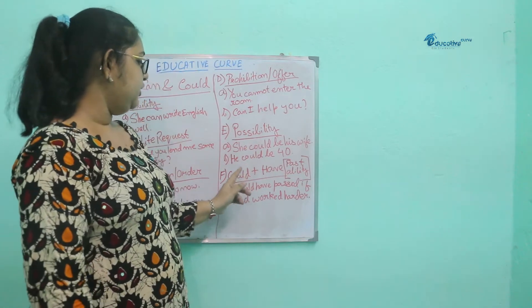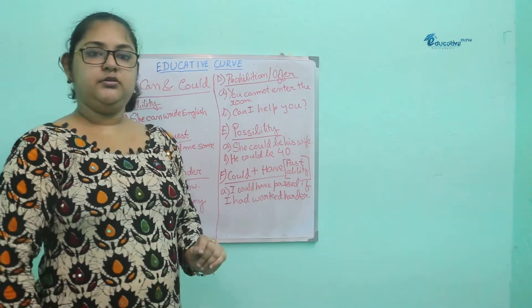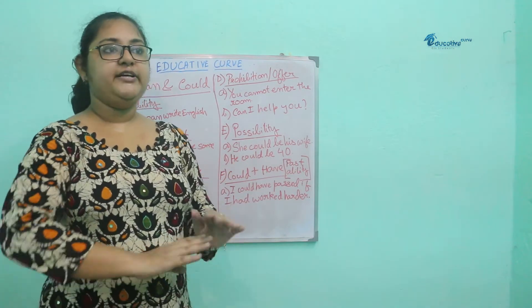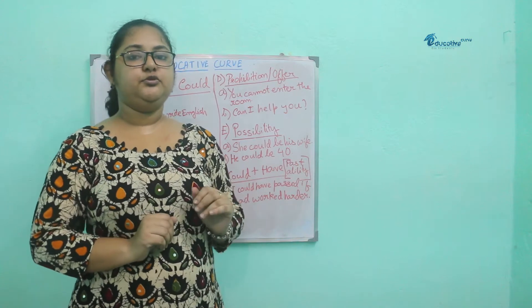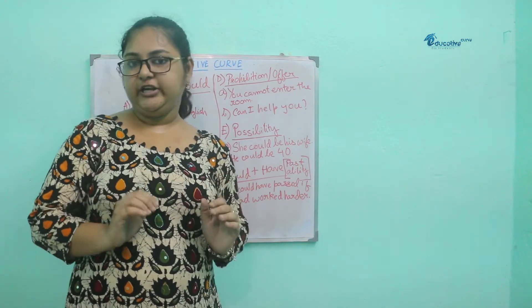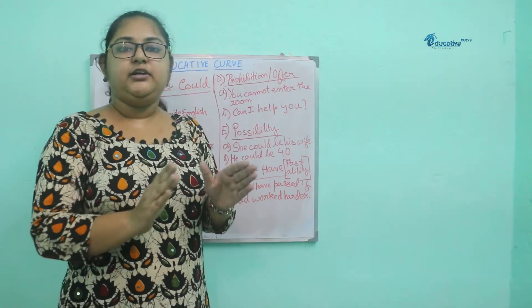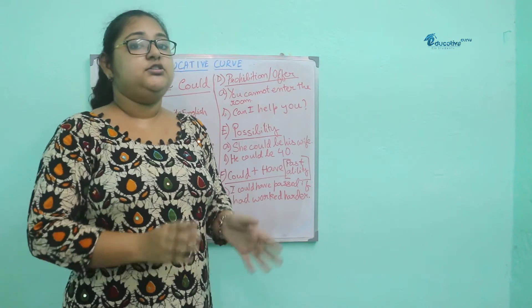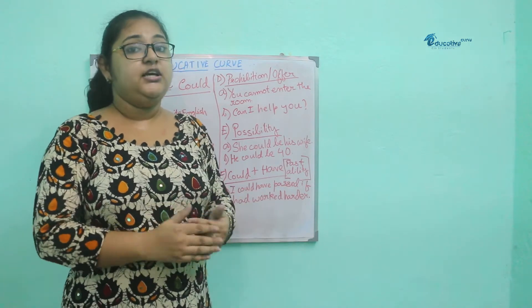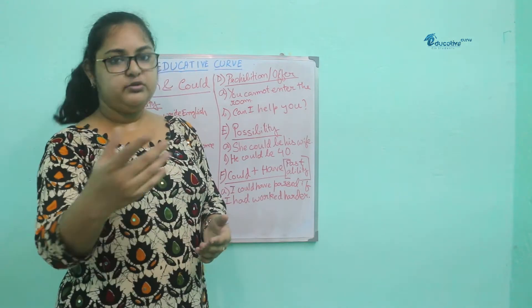He could be 40. By seeing a man or a woman, suppose we want to guess their age — they might look to be 40. So we say he could be 40 or she could be 40. By the help of could, we are expressing a possibility about something.